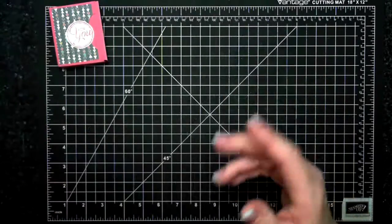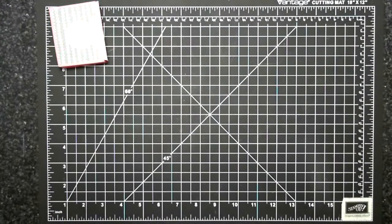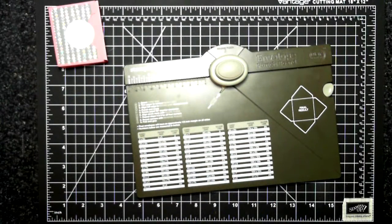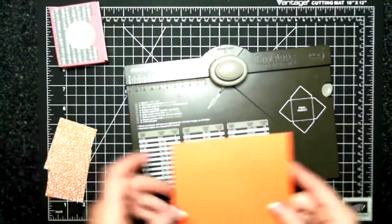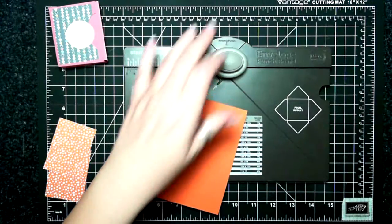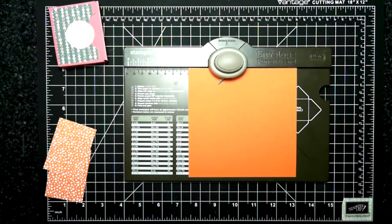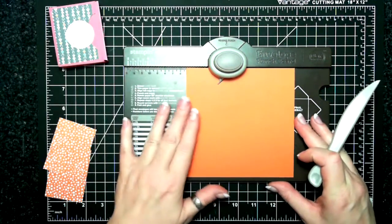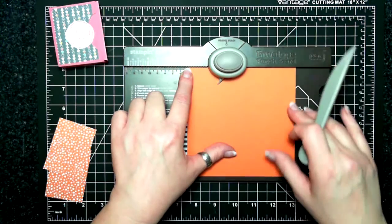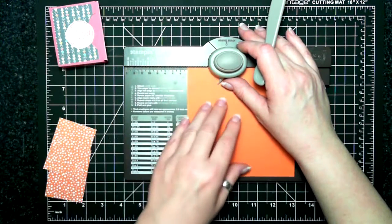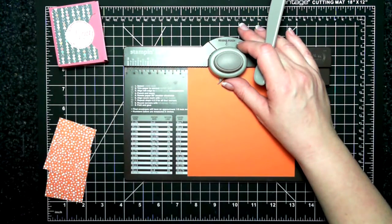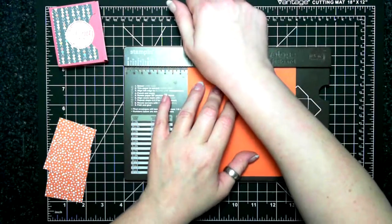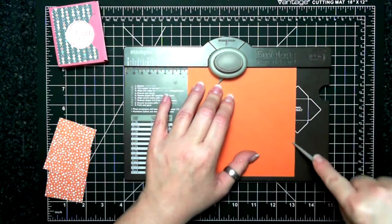Here's my envelope punch board and my little piece of cardstock that I require is five and a half by five and a half. Today in the demo I'm using Tangelo Twist. So I'm using the two inch mark and you can't see it because my light is so bright.